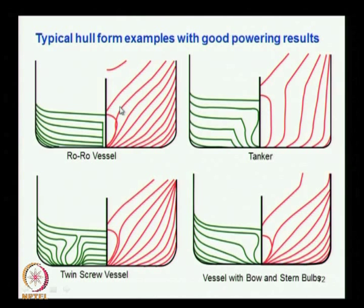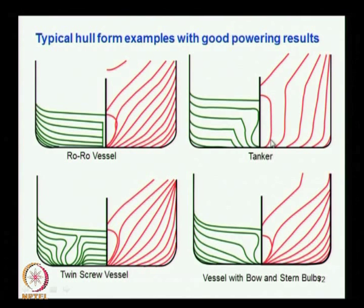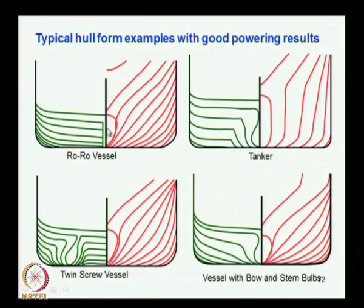Here is another vessel showing a different type of bulb — the shapes get adjusted and the forward region form is modified to accommodate the bulb. You can also see a stern bulb here — some vessels use a stern bulb, which improves the flow to the propeller in the stern region, enhancing flow conditions and making the propeller more efficient.